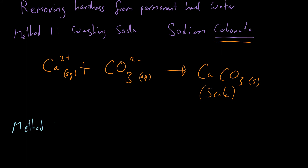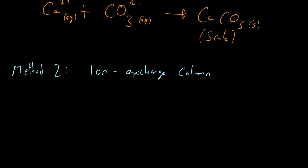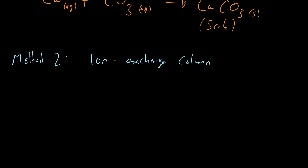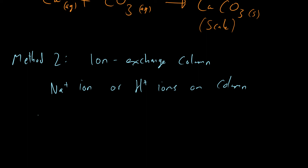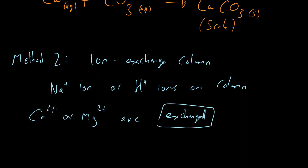Method two is using what we call an ion exchange column. How it works is we have a column which has on it ions that are not calcium or magnesium — the ions causing the water to be hard. So we might have sodium ions or even hydrogen ions on the column. We allow the water to pass through, and the calcium or magnesium ions which are causing the hardness are exchanged — basically swapped — with those other ions, either sodium or hydrogen.